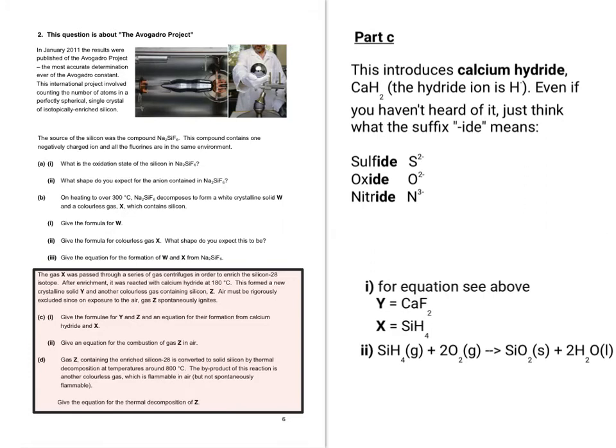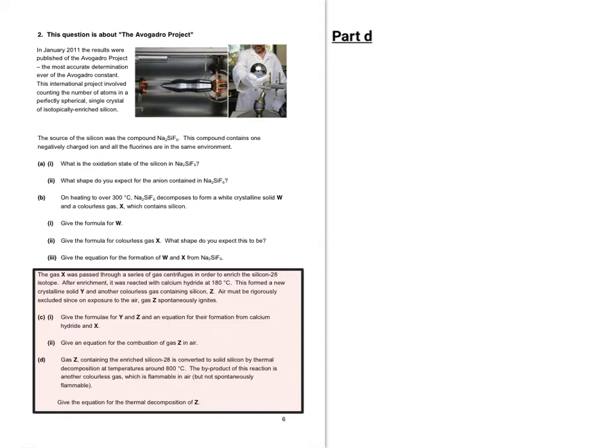Now we can move on to part D. On this one they ask you for the thermal decomposition of Z, saying that it decomposes into solid silicon at temperatures around 800 degrees C. The by-product of the reaction is another colourless gas, which is flammable but not spontaneously flammable. Hopefully that wasn't too difficult to work out, seeing as you were just breaking up the SiH₄ into silicon and something else. The only thing that something else could be would be hydrogen.